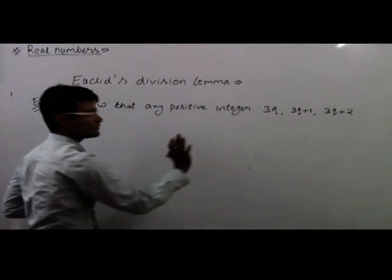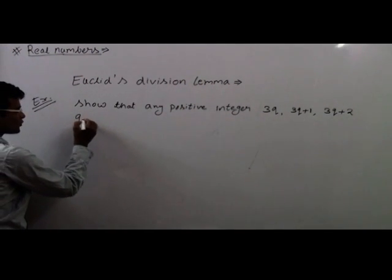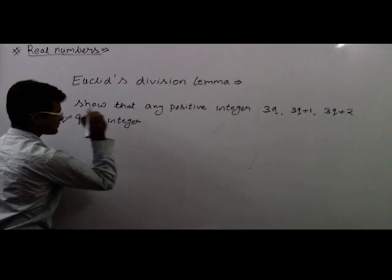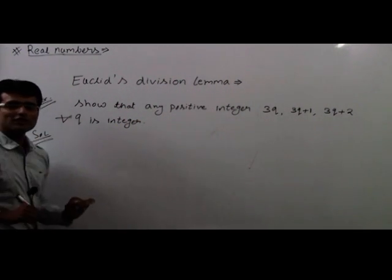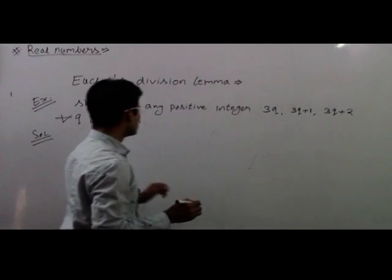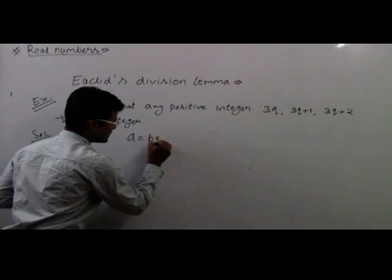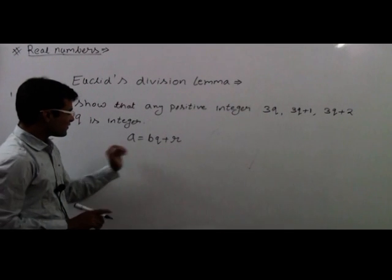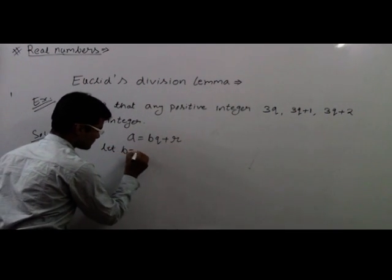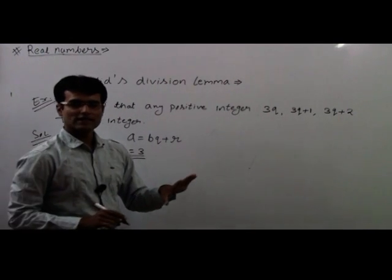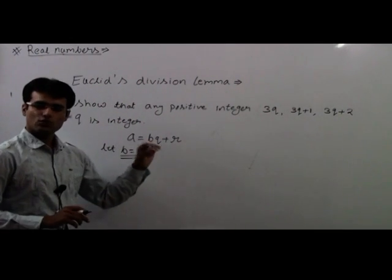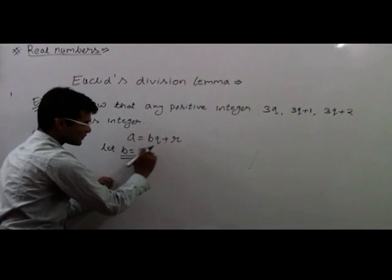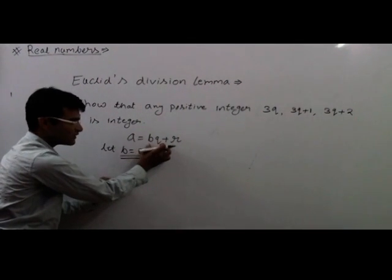So how do we do that? For all Q, where Q is an integer, we will use Euclid's division lemma. This lemma says A is equals to BQ plus R. Now, if we let B equals to 3 — why B equals to 3? This is a random number; we can choose B equals to 1, 2, or 3. But why 3? Because we have to prove in terms of 3. Here, we need to put B as 3 so that 3 will be with Q.